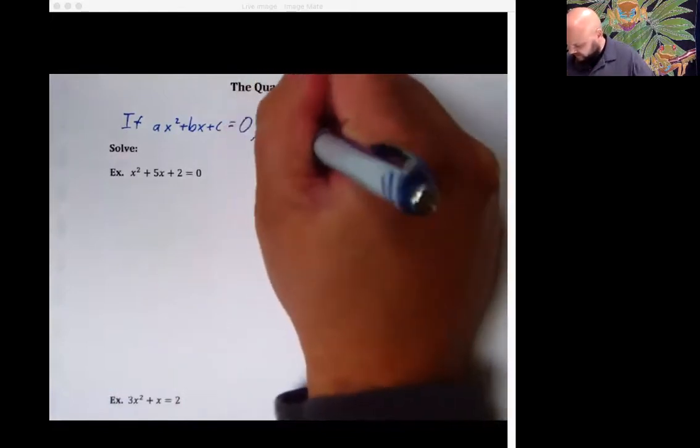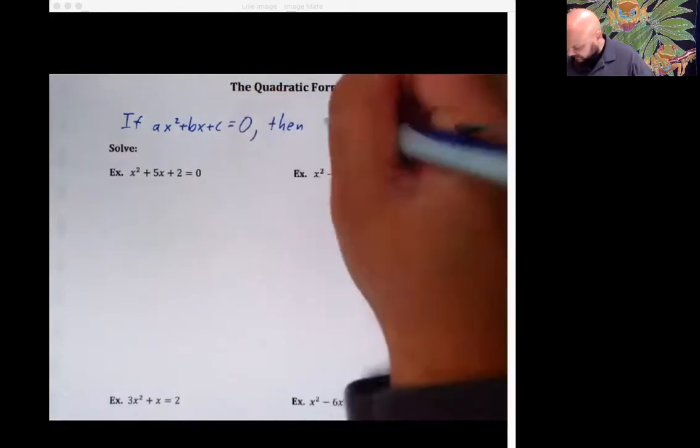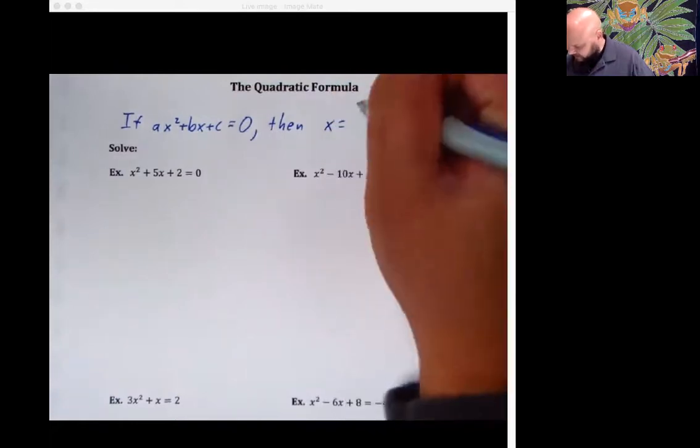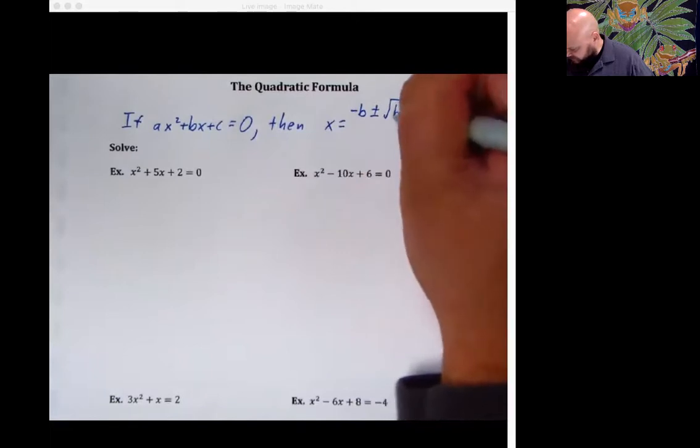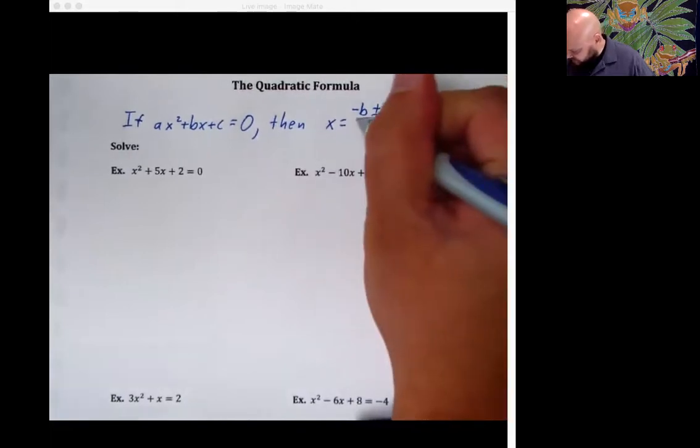Then we get this fancy, fancy formula of x is equal to negative b plus or minus the square root of b squared minus 4ac all over 2a.